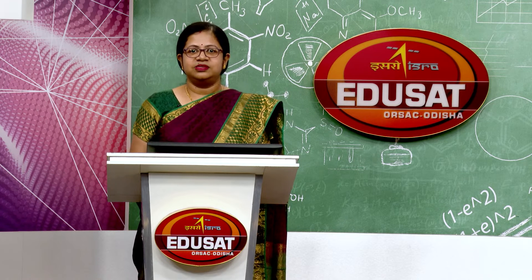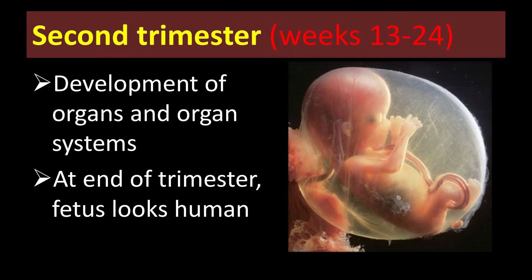In the second trimester, weeks 13 to 24, the development of the rudiments formed in the first trimester leads to the development of organs and organ systems. By the end of this second trimester, the fetus looks somewhat like a human. In the diagram, the fetus is visible within the amniotic sac, the placenta is well-marked, the limb buds along with fingers are present, and the eyes are yet not fully developed.